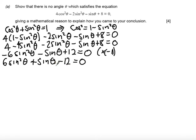At this point if you don't like factorising with sin theta you can rewrite this as 6s² + s - 12 = 0. If I do 6 times -12 I get -72.